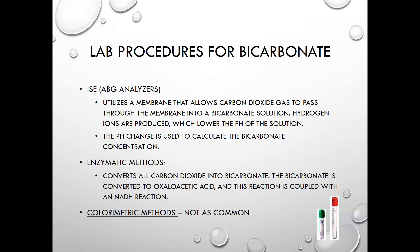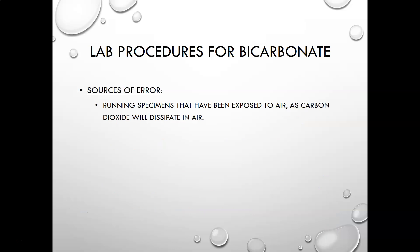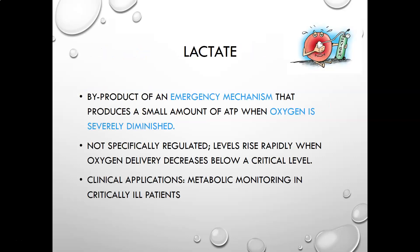Colorimetric methods are not commonly used. Samples are usually heparinized plasma, although for enzymatic methods serum can also be used. A key source of error is running specimens that have been exposed to air, as carbon dioxide will dissipate into the air, leading to falsely low results.